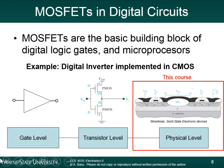This is an example of an inverter. There's an input connected to the gates of two transistors — a PMOS device and an NMOS device. The drains are connected together. The source of the PMOS is connected to VDD, the supply voltage, and the source of the NMOS is connected to ground. If you put in a high voltage at the input, you get a low voltage at the output. Put in a low voltage, you get a high voltage at the output. It's an inverter. Different logic gates can be implemented by different combinations of transistors.